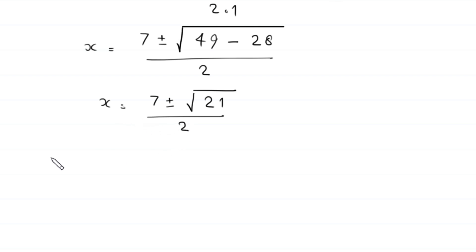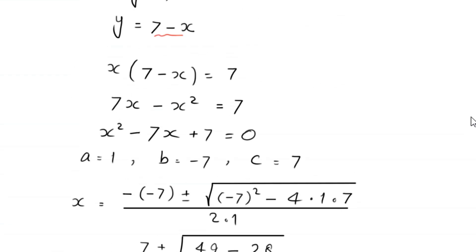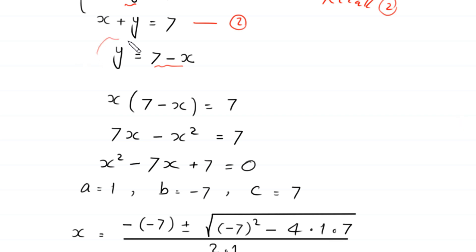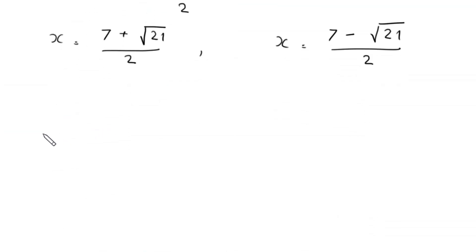From the quadratic formula, we get two values of x: x equals (7 plus root 21) over 2, and x equals (7 minus root 21) over 2. To find the values of y, we recall the equation y equals 7 minus x.